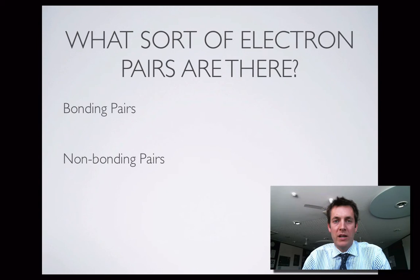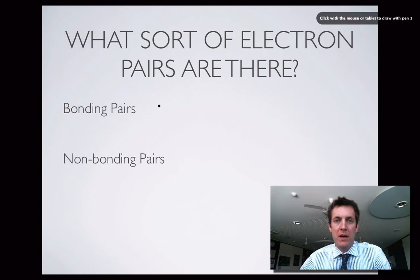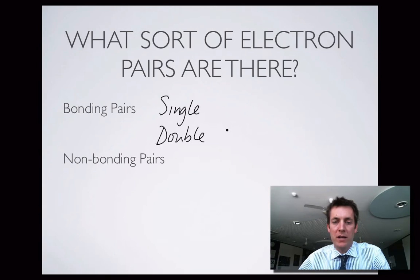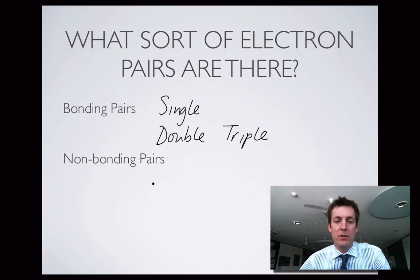Before we start looking at the shapes of molecules, it's worth considering what kind of electron pairs there are. As you'll remember having drawn them when you were drawing your electron dot diagrams, there's bonding pairs, and they can be either single, or they can be double or triple bonds. Pairs of electrons can occur in all those different kinds of covalent bonds.